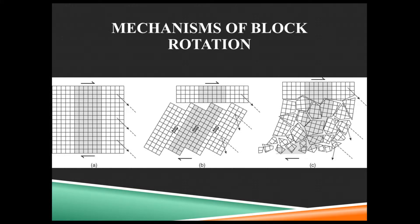We can also get rotation within a strike-slip fault zone. If you think of this as the fault zone — say this is a mile wide — each of these blocks is a segment within that fault zone. We can get some of it sliding, some of it doing slow, close-to-perpendicular fault motions. This is like when we had the playing cards or the dominoes, shearing and then sliding past each other.